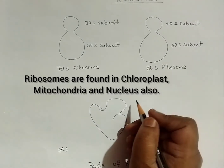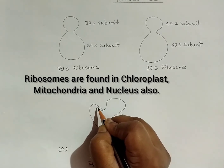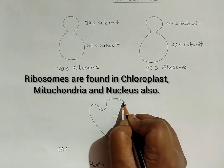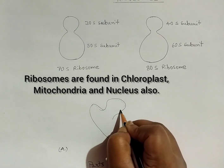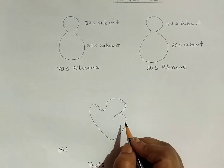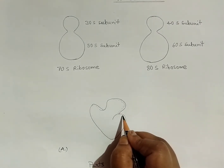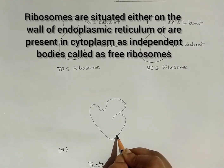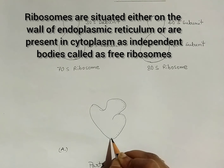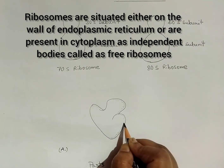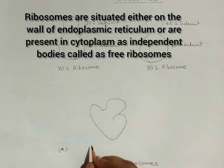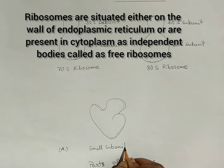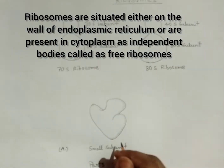Ribosomes are found in chloroplast, mitochondria, and nucleus also. They are situated either on the wall of endoplasmic reticulum or are present in the cytoplasm as independent bodies called free ribosomes.